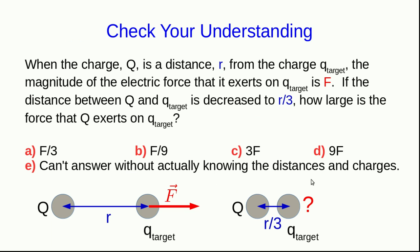Many students have difficulty understanding what's meant by an inverse square law, so here is a question to test your understanding. We have a charge q at a distance r from a target charge q-target, exerting an electric force of magnitude F. Now suppose we reduce the distance between q and q-target to one third of the original. How large is the force that the charge exerts on q-target now? Think about this and make a choice before going on to the next part of this video lecture.